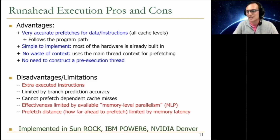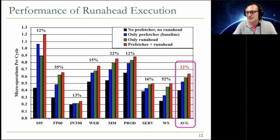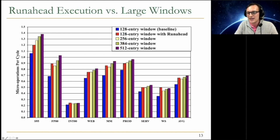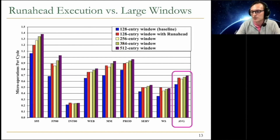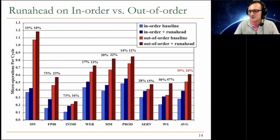We later tried to solve these issues in further work. But quickly on results: we found good results on an aggressive baseline with an aggressive prefetcher. We showed that you can achieve the benefit of almost three times the size of an instruction window. And we showed that this idea works with aggressive in-order processors as well, and you get even more benefit.